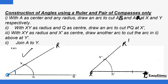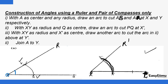Once you make that arc and label the intersections X and Y, you cannot change the radius. That same radius will now be used as you transfer the angle to the other end. With the same radius, using Q as the center, draw an arc on the other side — just draw an arc that way, the same radius.